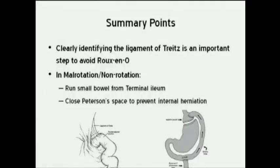In summary, we felt that it is important to always clearly identify the ligament of Treitz in order to avoid construction of a Roux-en-O. Specifically in the setting of malrotation or non-rotation, we thought it was helpful to run the small bowel starting at the terminal ileum, and we also thought it was important to close Peterson's space to prevent internal herniation.